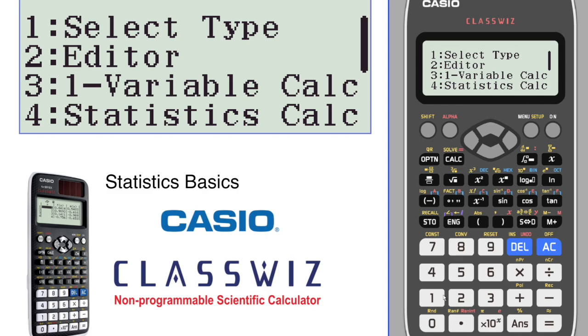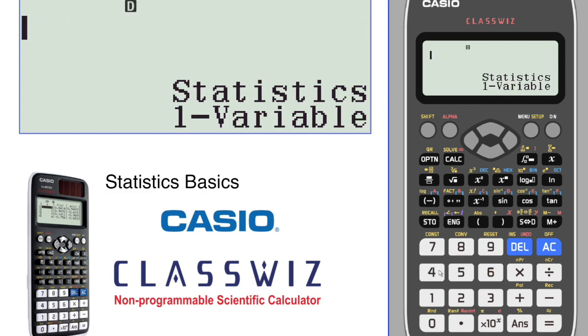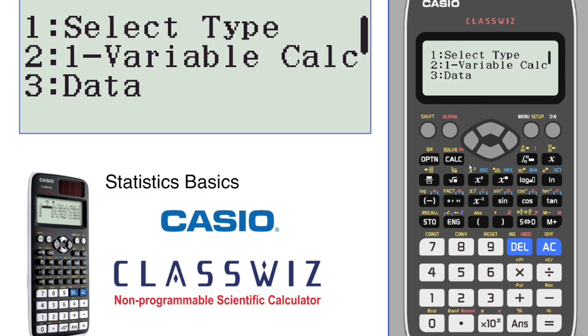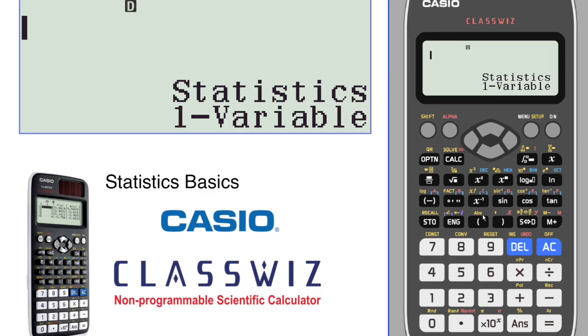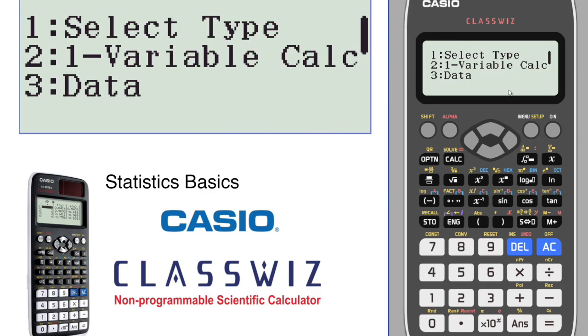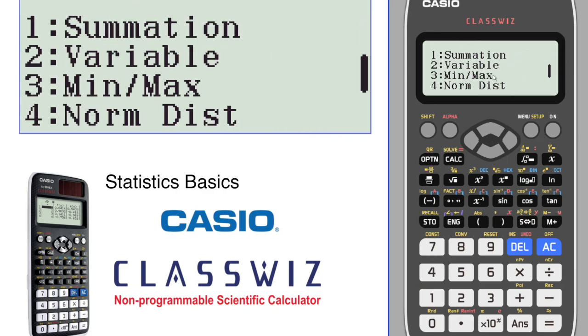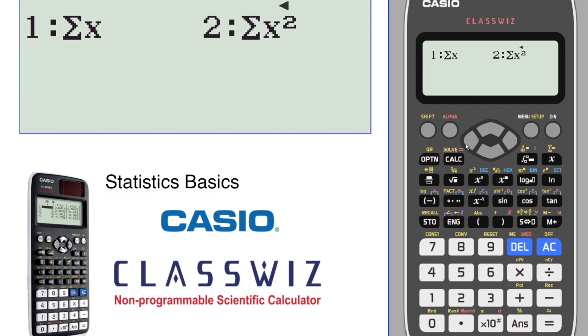Using the back arrow, we can go back and go to stats calculations. Look at the options there. There's our data. One variable. So let's see what else we have down here. Summation. We can look at the summations. That's the sum or the sum of squares.